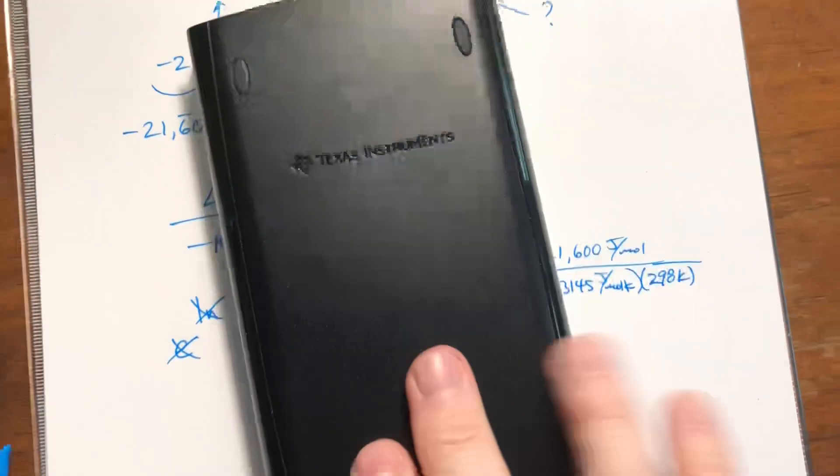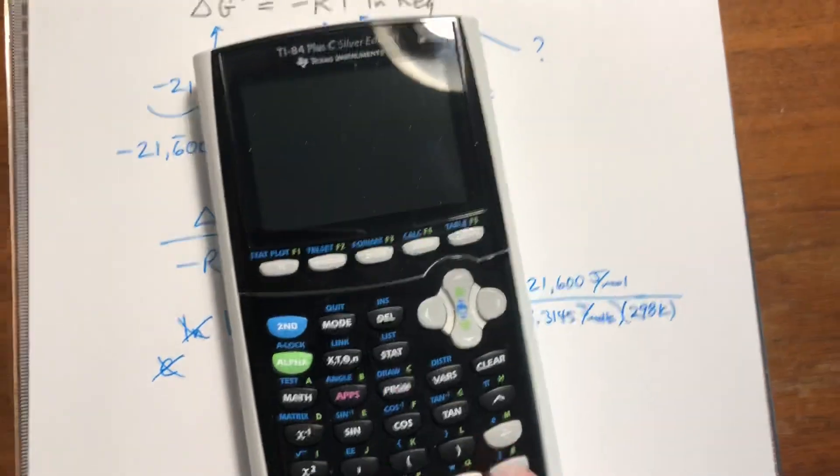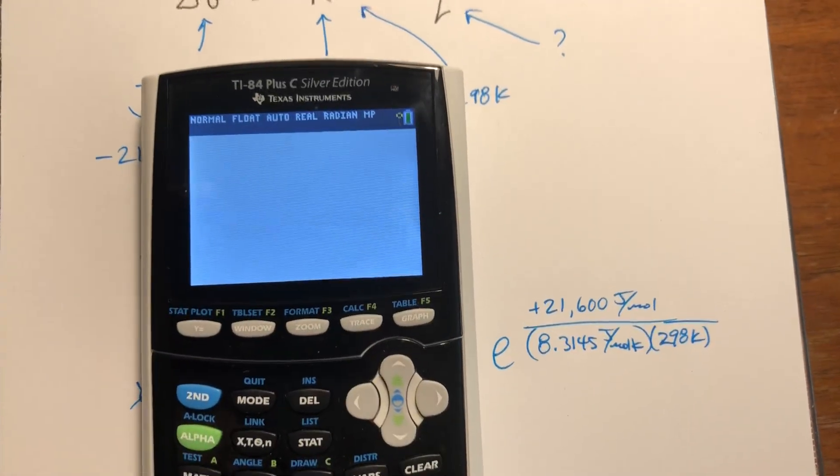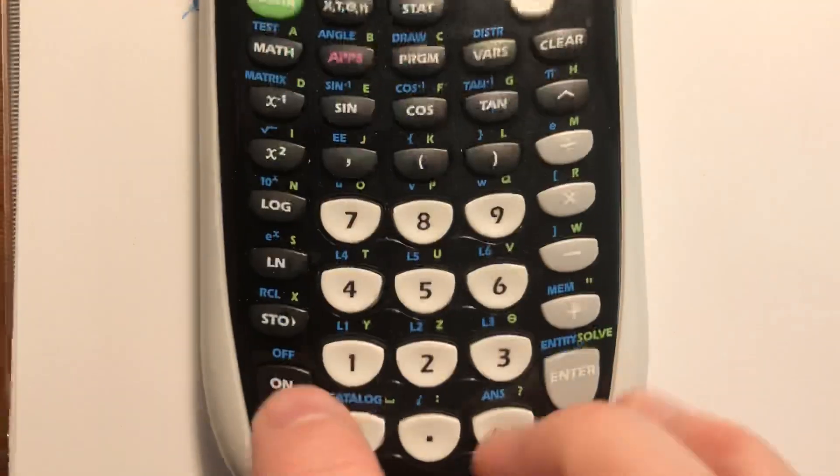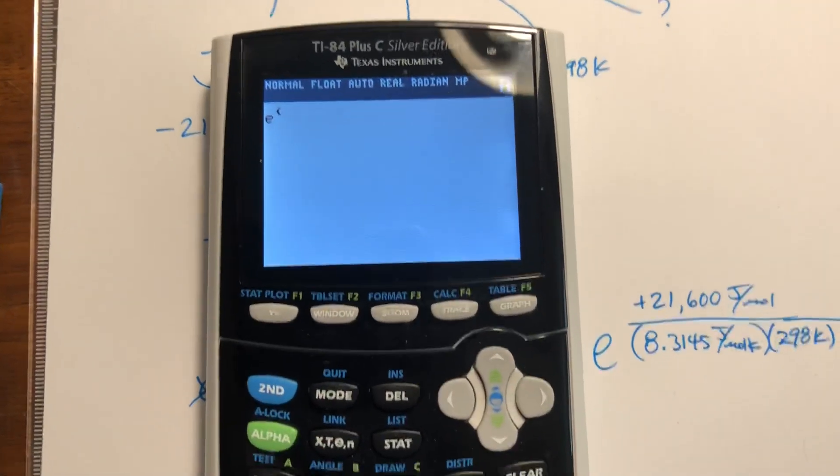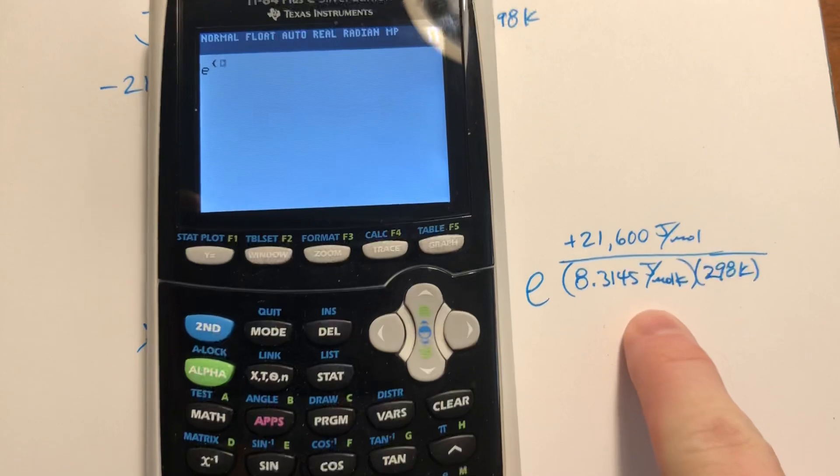Typing this in your calculator. So, we're going to hit second, E to the X, it's essentially the second button of the natural log. I'm going to go ahead and put parentheses around it because we have a bunch of stuff to type in.